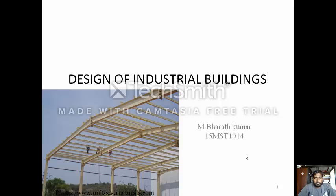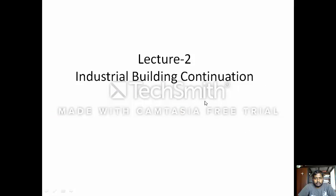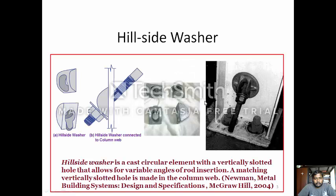This is the continuation of Lecture 1, Vision of Industrial Buildings. Next comes the Hillside Washer. This is an equipment which casts a circular element with a vertically slotted hole that allows the variable angle of the rod in position. A matching vertical slotted hole is in the column as shown in the figure, so that the rod is vertically attached into the column.